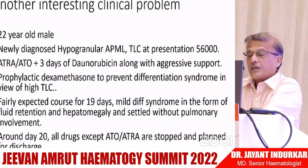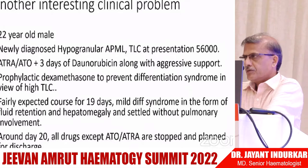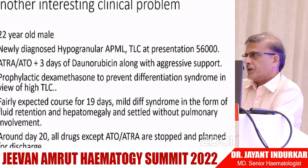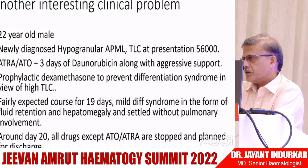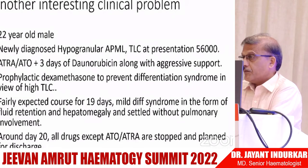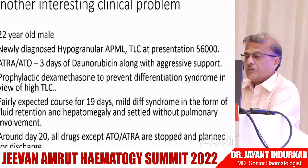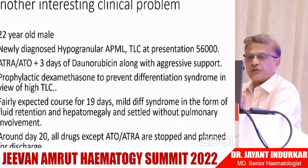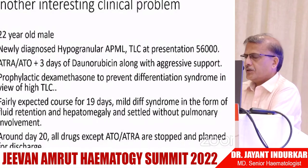Moving to a treatment-related case: a 22-year-old male with newly diagnosed hypogranular APML, TLC at presentation 56,000. Those who treat this disease are extremely paranoid and attached to these patients because it is highly curable, but we have to take them through the first three to four weeks. This was a high-count APML: ATO plus three days of daunorubicin with aggressive support, prophylactic dexamethasone started immediately. Around day 19 there was mild differentiation syndrome — fluid retention and hepatomegaly — but it settled without pulmonary involvement.